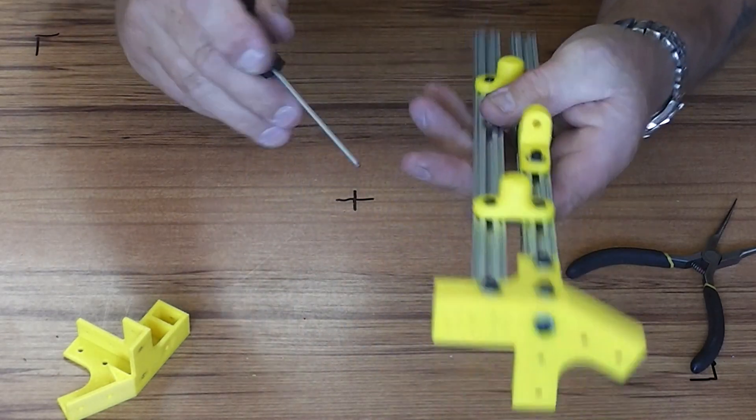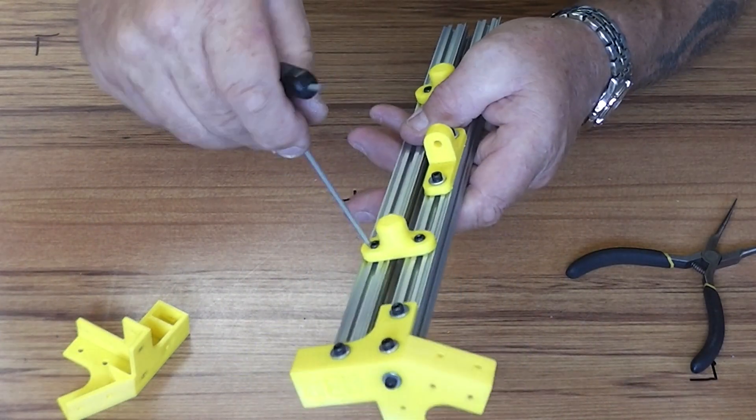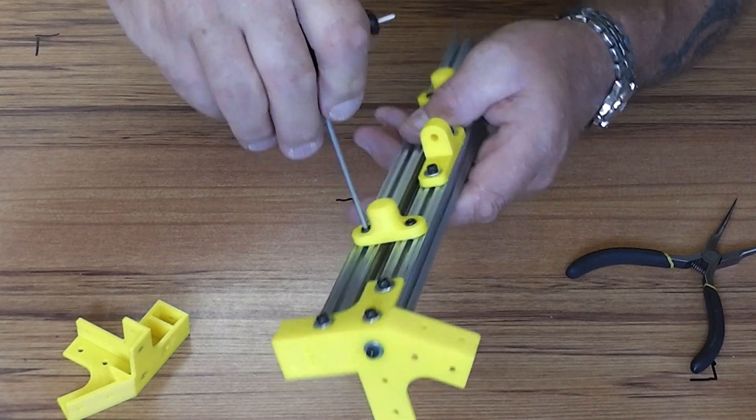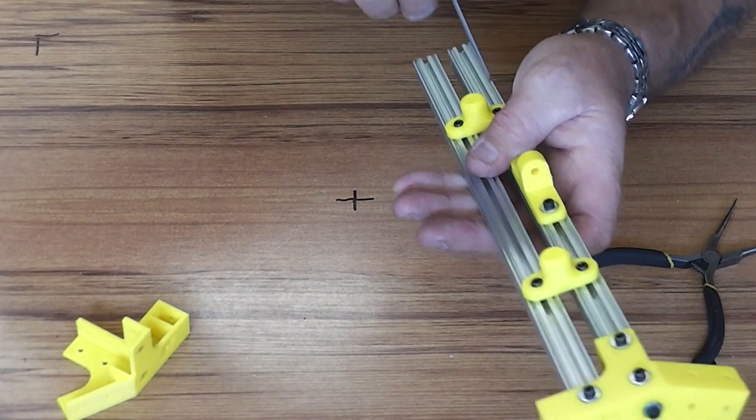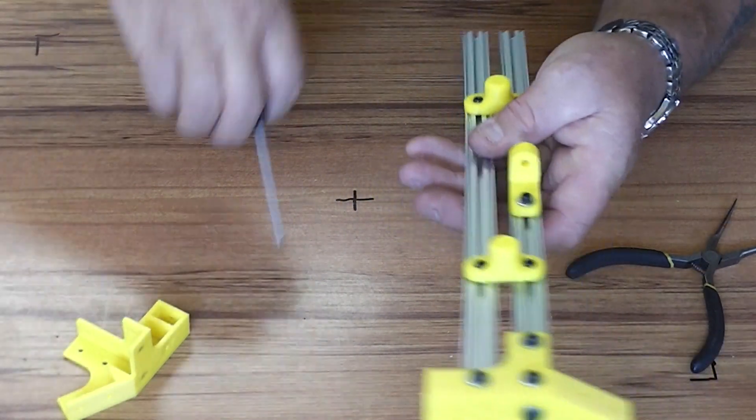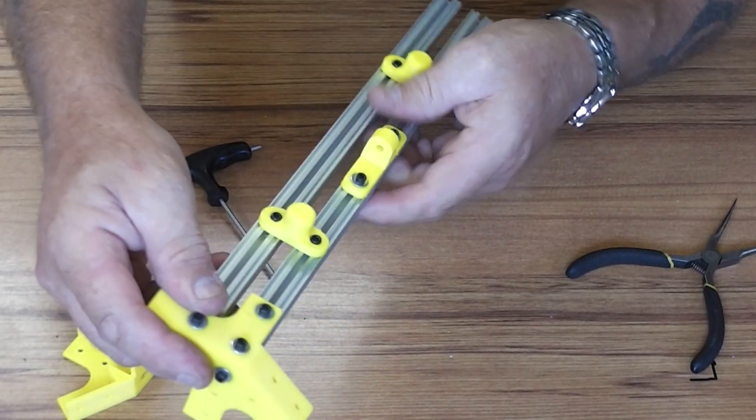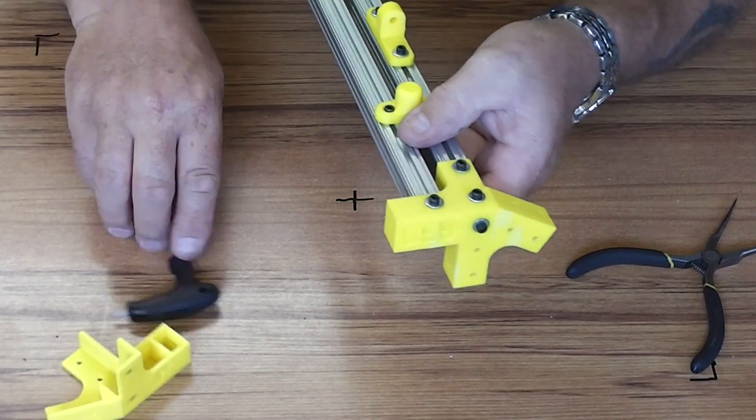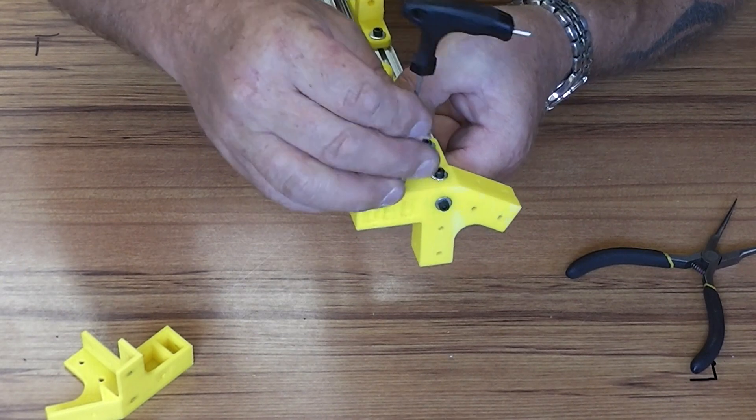Now, before we do anything we just want to make sure we loosen these clamp nuts because we don't want to be fighting against them to get everything square. So loosen them slightly and then everything should push in, and then tighten the clamp ones at the end.